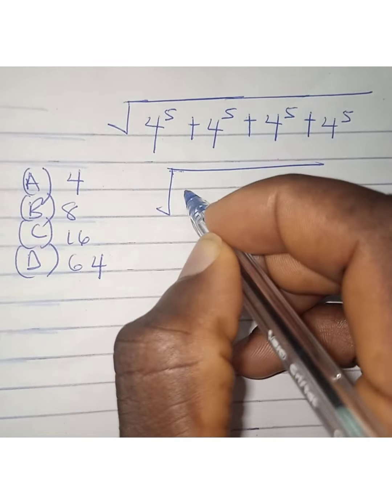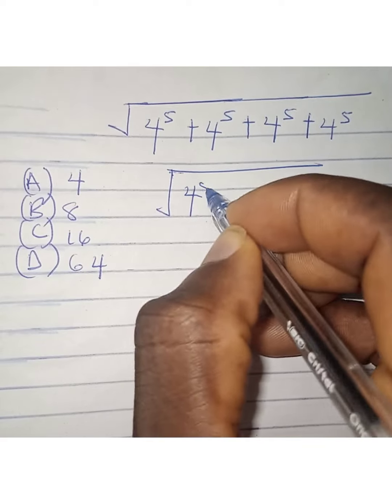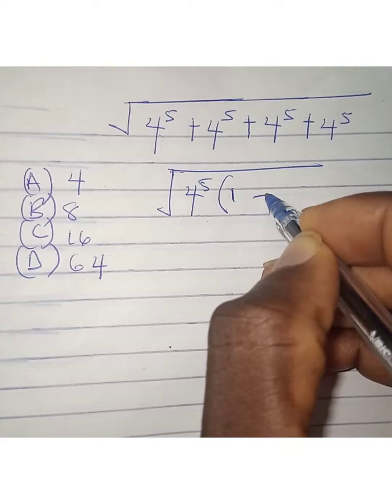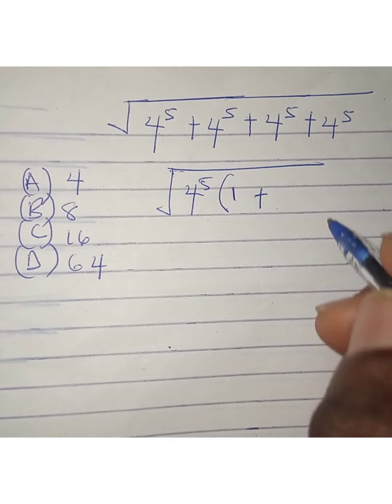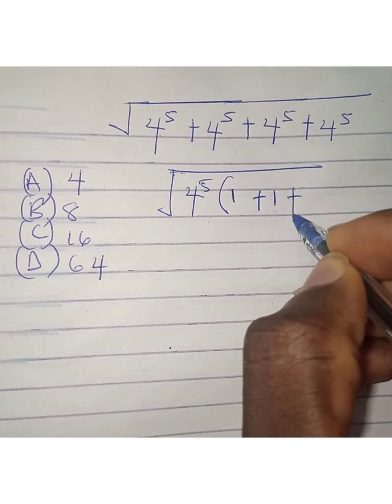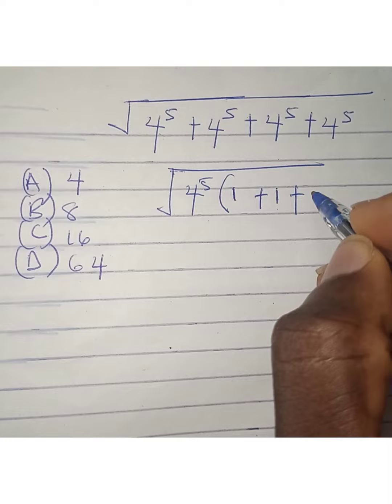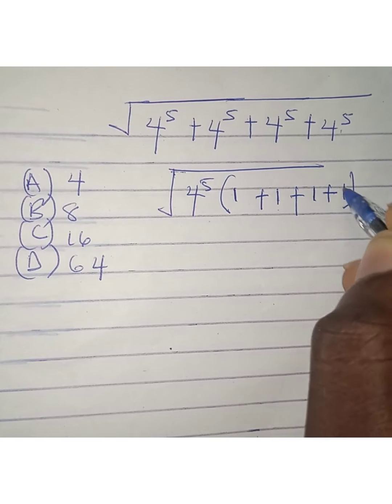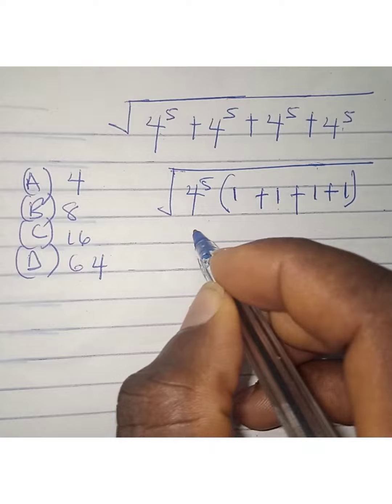Root of 4 to the power of 5 open bracket, 4 to the power of 5 divided by 4 to the power of 5 is 1, plus 4 to the power of 5 divided by 4 to the power of 5 is 1 again, plus 4 to the power of 5 divided by 4 to the power of 5 is 1, plus the last one here 1. So everything now gives us root of...